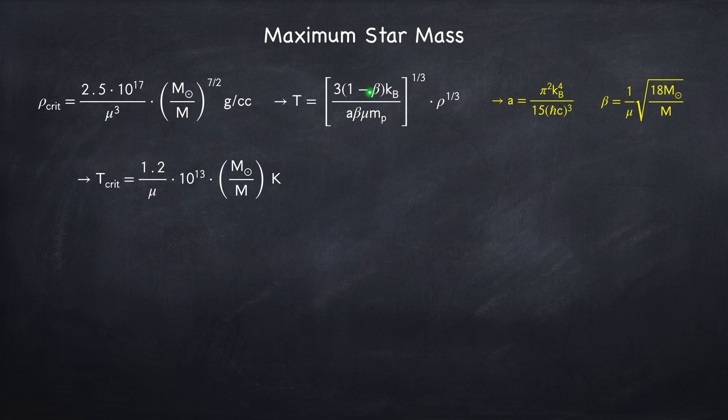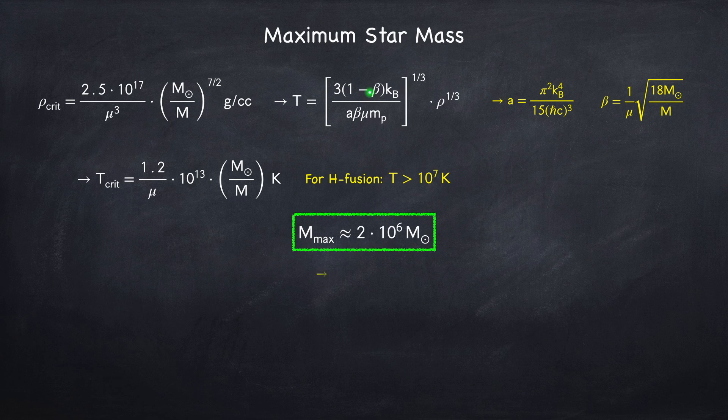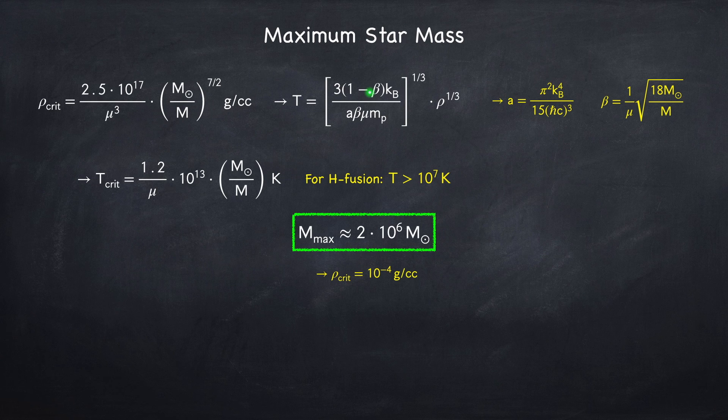Now remember what a star is. It's a ball of gas that's supported against gravity by the energy released due to nuclear fusion inside of its core. And in order to fuse hydrogen into helium, you need a temperature of about 10 to the 7 Kelvin or more. So we can set the critical temperature to 10 to the 7 Kelvin and solve for the mass to find that the maximum mass of a star is about 2 million solar masses, and the corresponding critical density is about 1 tenth the density of air.